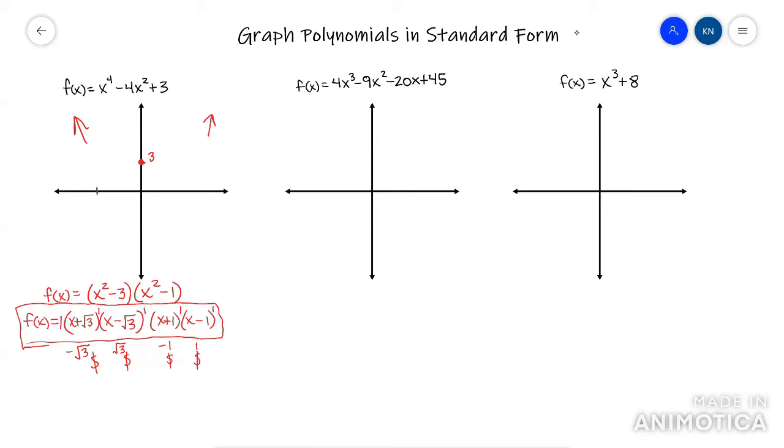So go ahead and mark it on your graph. We'll call this negative root three. We'll call this negative one. We'll call this positive one and we'll call this positive root three. Again, this is not to scale, so it doesn't really matter. Okay, now I have all the information that I need.